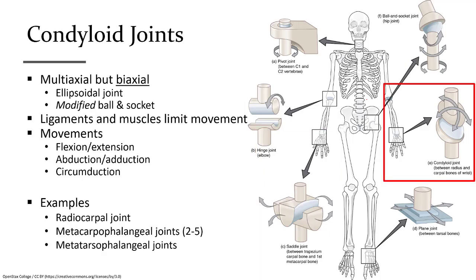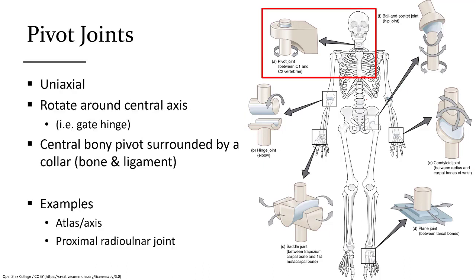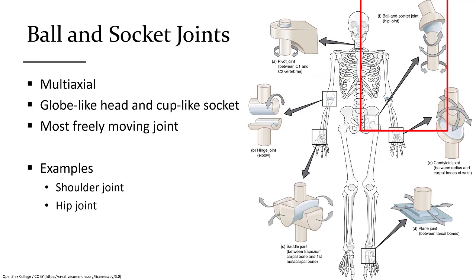Condyloid joints are similar to a ball-and-socket joint but with more limited movements; the relationship between the radius and the wrist is an example. Pivot joints have one bone twisting within a space, as occurs between the first two vertebrae in the spinal column to produce the side-to-side motion for the head in the gesture for 'no.' Finally, ball-and-socket joints, such as the shoulder or hip, have one rounded head fitting into a concave cup. The shoulder has a greater range of motion because the cup is very shallow, while the hip socket is much deeper and more limiting.